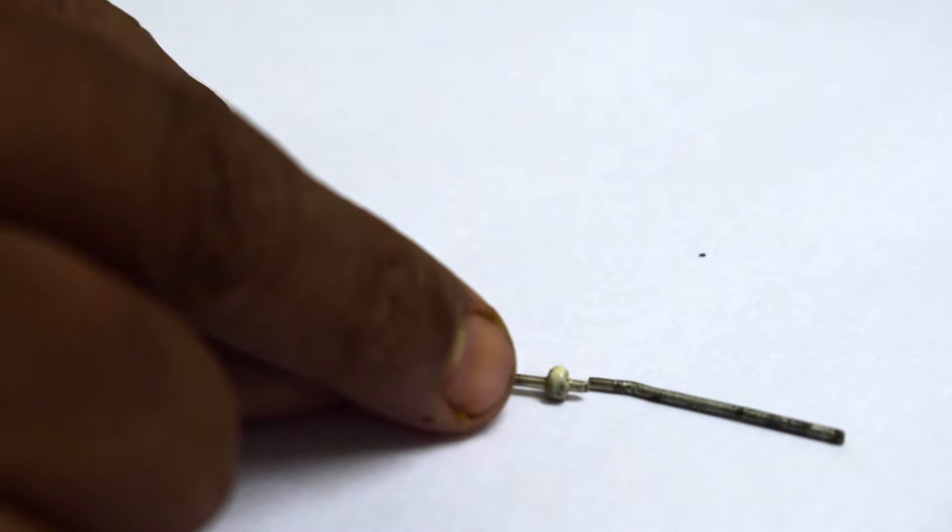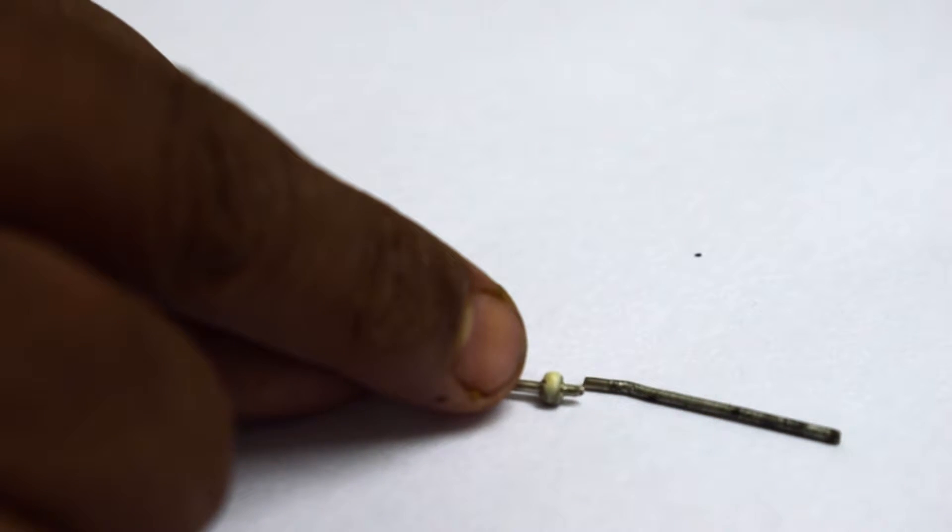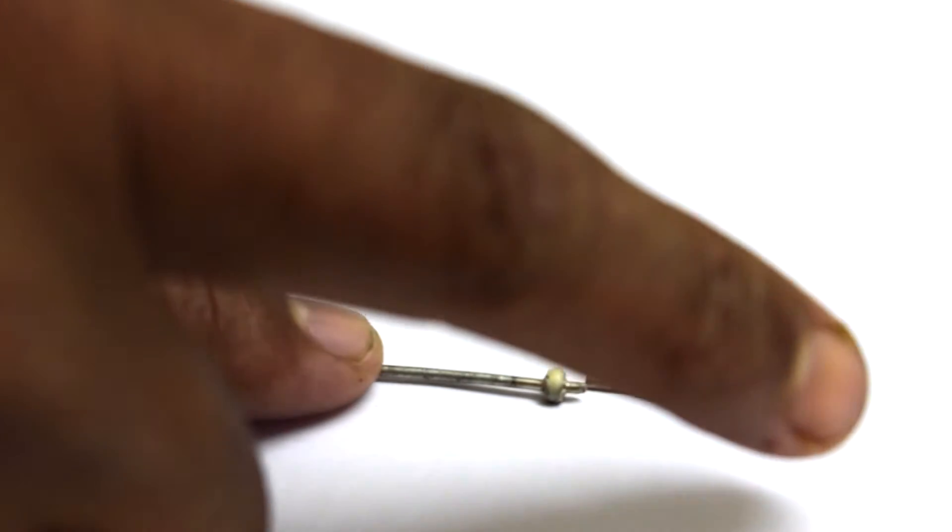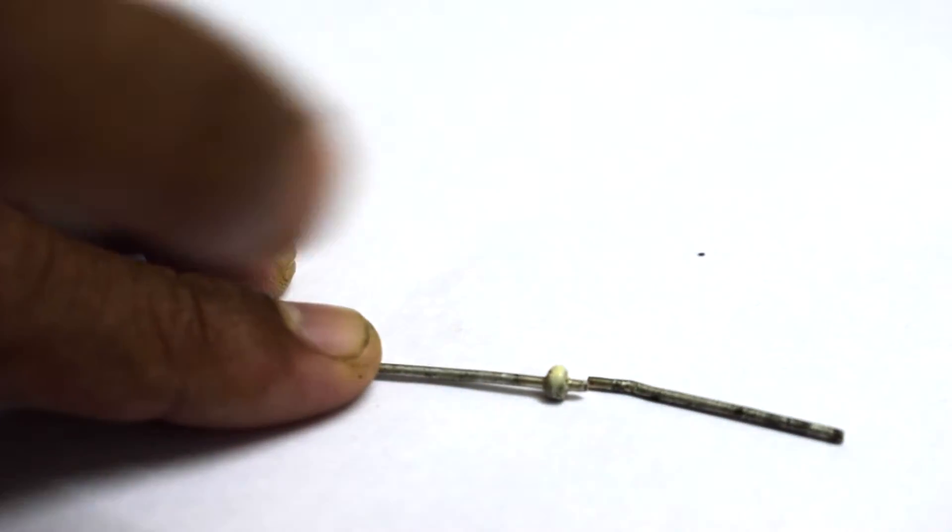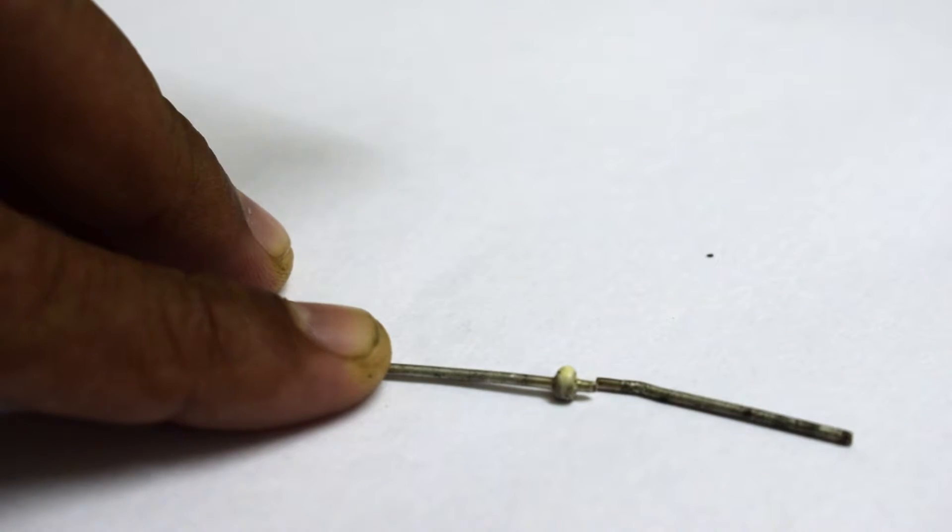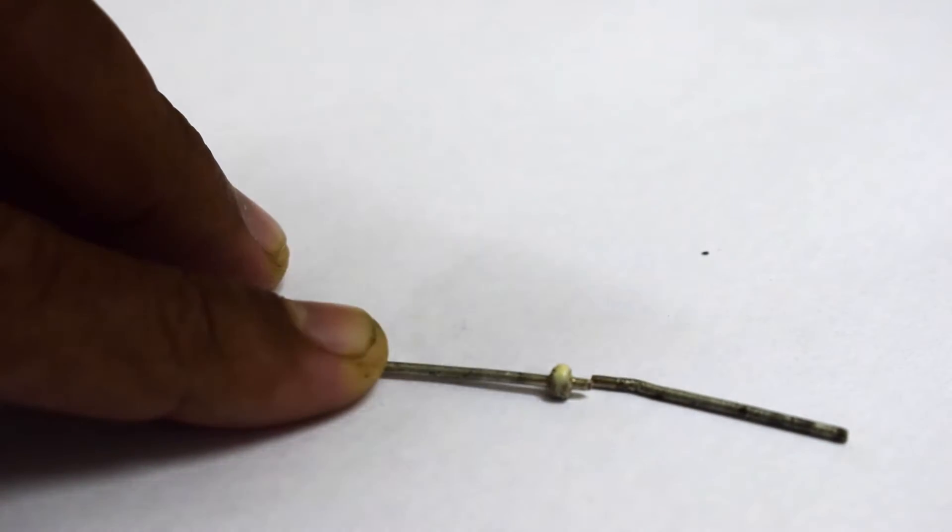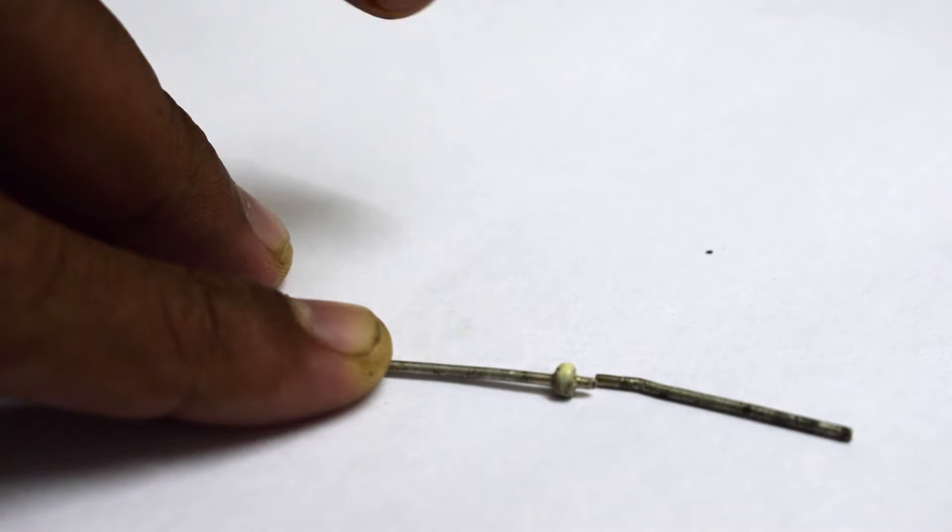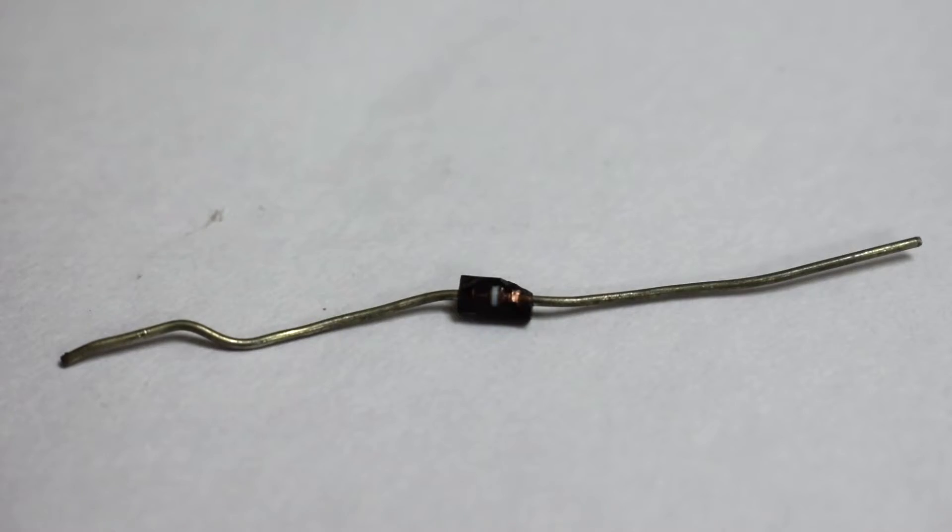This part which I'm showing here right now is the silicon part, and it allows the flow of current in this direction and not in the reverse direction. From your screen, you can see that current goes from right to left, and not from left to right.